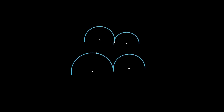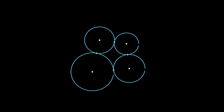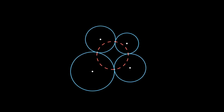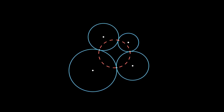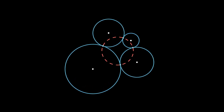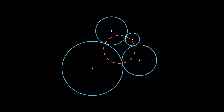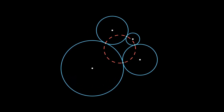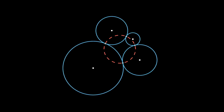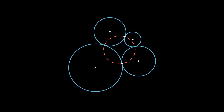Consider four circles that are touching each other. One surprising fact that seems to be true is that the four touch points always remain on a circle. But is this always true? In this video, we will try to prove it.